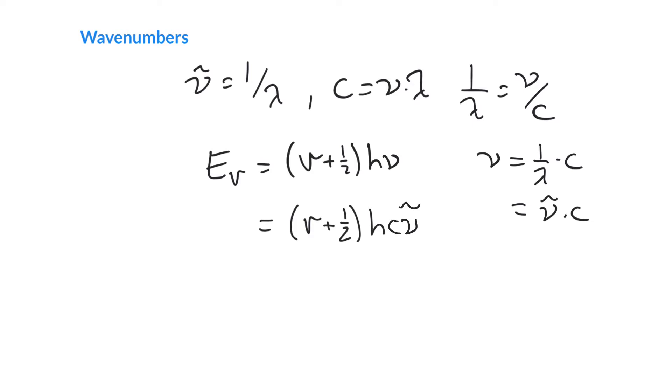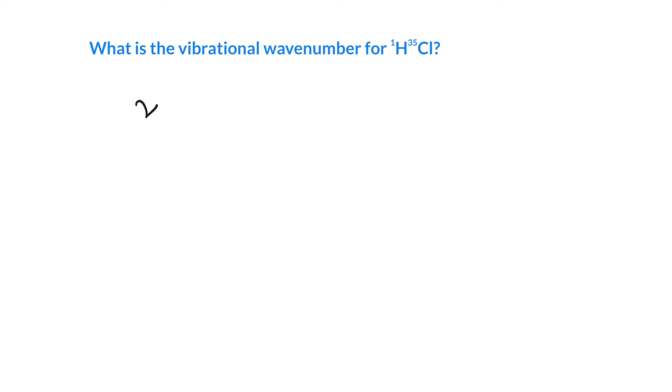If we want to write an expression for nu tilde, that is equal to nu over C. That is 1 over 2 pi times C multiplied by the square root of k over the effective mass. We can calculate the vibrational number for the vibrational motion of a molecule like hydrogen chloride. We just need to know all the terms in this expression. Some of them we can just look up, like 2 and pi and the speed of light. We need to know the force constant for HCl, and we need to calculate the reduced mass for HCl.